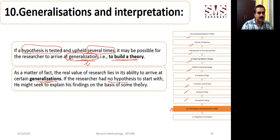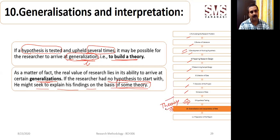If the researcher has no hypothesis to start with, they might seek to explain their findings on the basis of some theory. If a researcher has not formulated a hypothesis in the third step, they may generalize their conclusion with any established theory. If you haven't done any kind of hypothesis building, then you are expected to match your conclusion with any established theory. Only then is your research going to be justified.